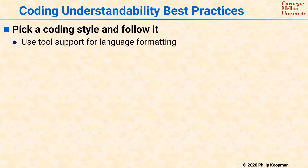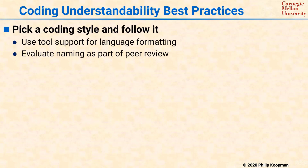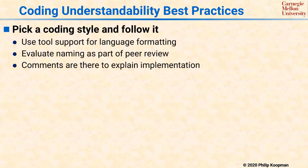The best practices for coding style aren't so much the nitty-gritty details of your style guide, but rather to pick a reasonable style guide, adhere to the general principles discussed, and actually follow it. You should be able to use available tool support for helping with things like language formatting, indentation, placement of curly braces, and things like that. You should evaluate whether naming conventions have been followed as part of your peer reviews, and also check that adequate commenting is in place to explain the implementation and, for code that's been modified, check whether the comments have been updated accordingly.